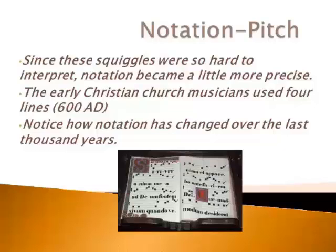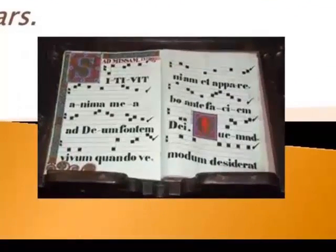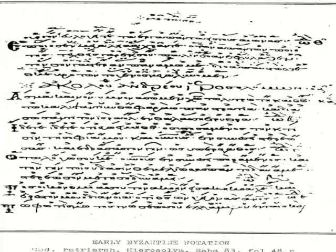Because these squiggles were so difficult to interpret and because these squiggles were also just used as a memory aid for the oral tradition, notation became more and more important and it became more and more precise. We're going to look at some of these slides just so you can see how notation has changed over the years.